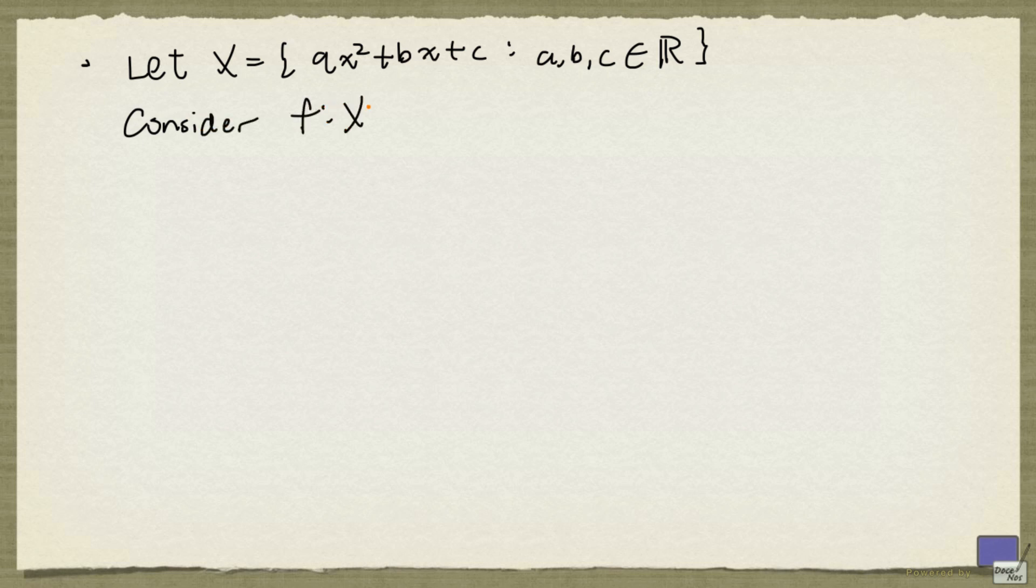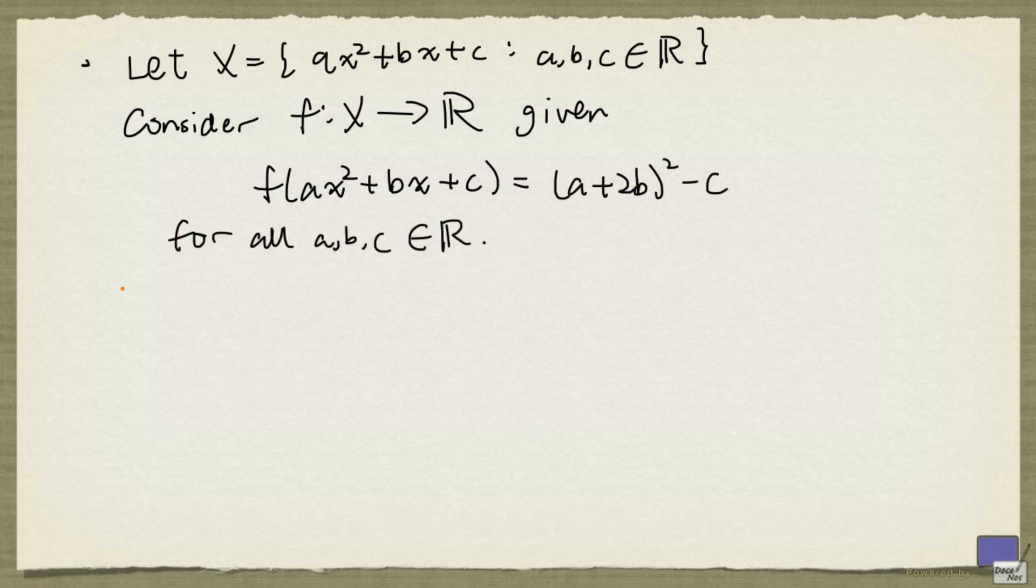This time we're going to let X be the set of quadratic polynomials in x with real coefficients. So in set notation, it's written like this. The function that we're going to consider is the following. So the codomain is going to be the set of real numbers. And X is the domain. And the function f is given by f(ax² + bx + c) = (a + 2b)² - c.